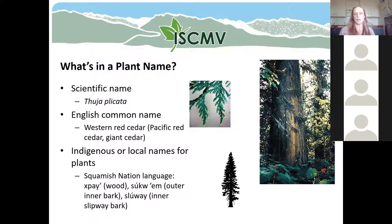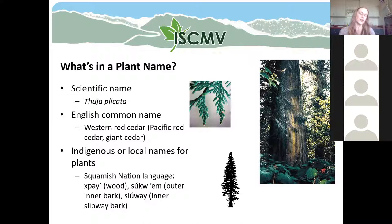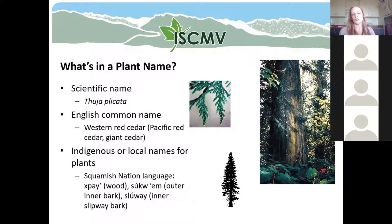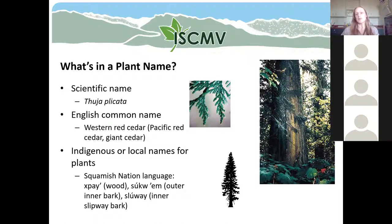We also have English common names for many different plants. Western Red Cedar is sometimes also called Pacific Red Cedar or Giant Cedar. And of course, there are also local or Indigenous names for plants. The Squamish Nation language has a number of different words for Western Red Cedar. Sometimes Indigenous cultures are so heavily dependent on plants that they have different names for different parts of the plant and different ways they're being used — often far more sophisticated naming than in English or scientific language.